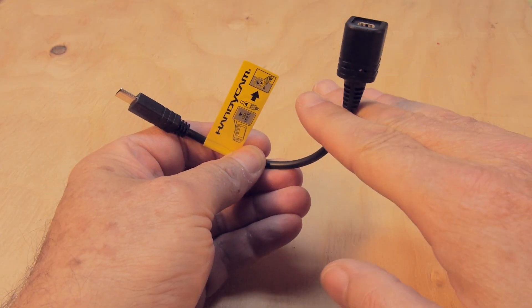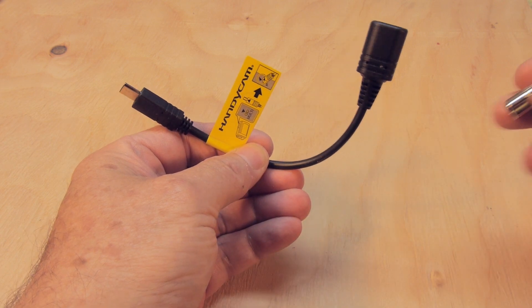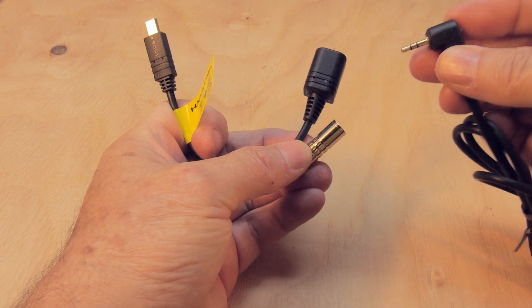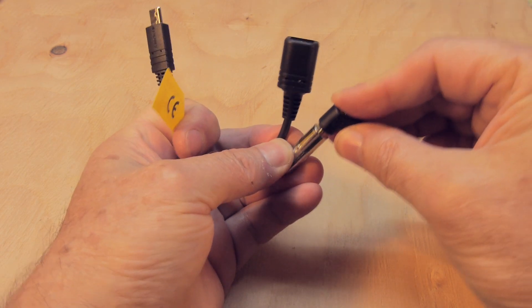So we're going to chop off the LANC connector here, and instead connect the wires to a 2.5mm jack, which you could then use with the intervalometer's 2.5mm plug.